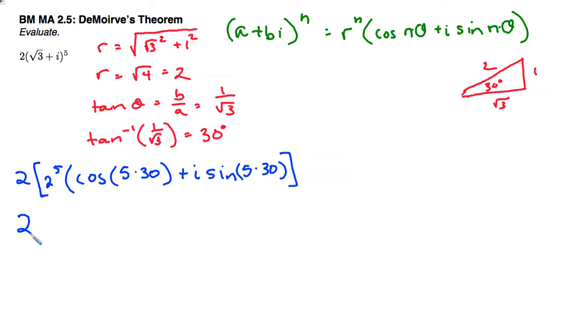And that's going to be 32, cosine of 150, plus i sine of 150.